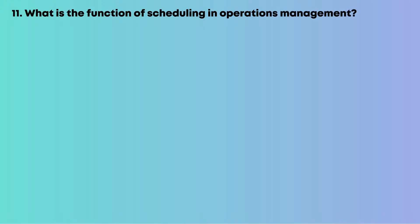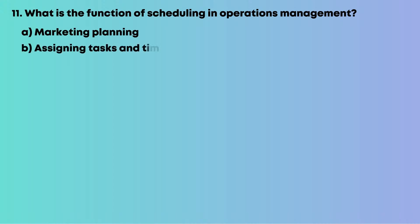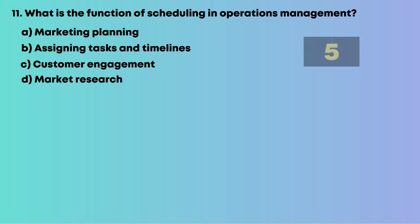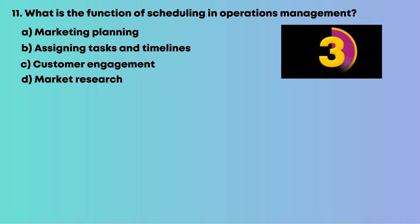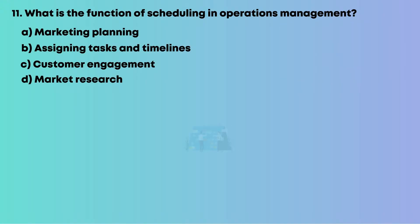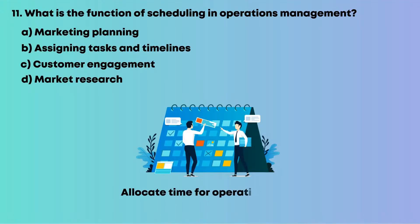Question 11: What is the function of scheduling in operations management? Options are: A, marketing planning; B, assigning tasks and timelines; C, customer engagement; D, market research. Scheduling helps allocate time for operations tasks. The answer is B, assigning tasks and timelines.